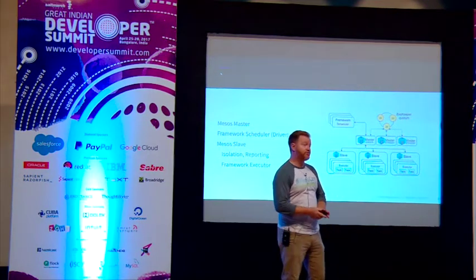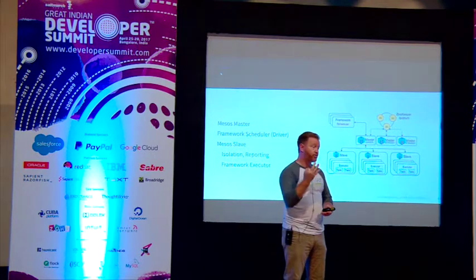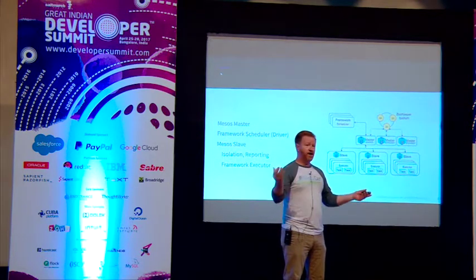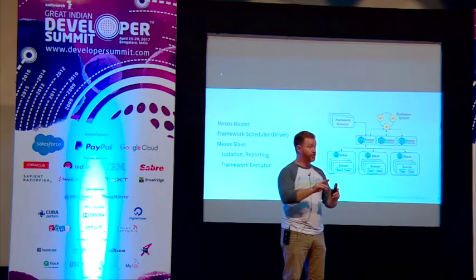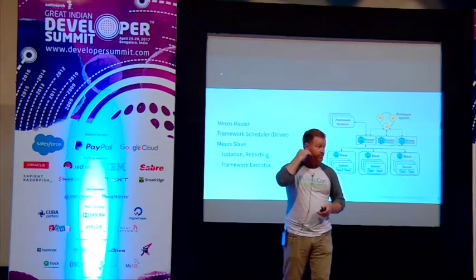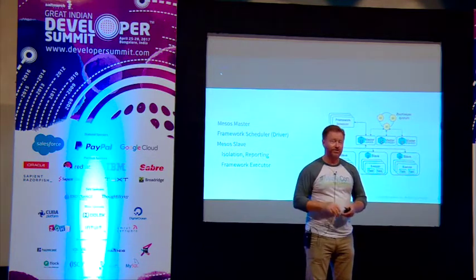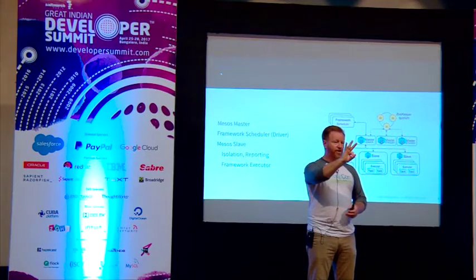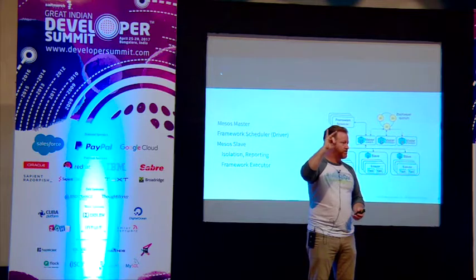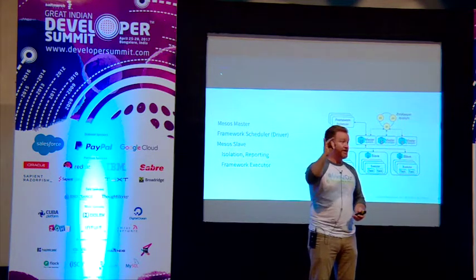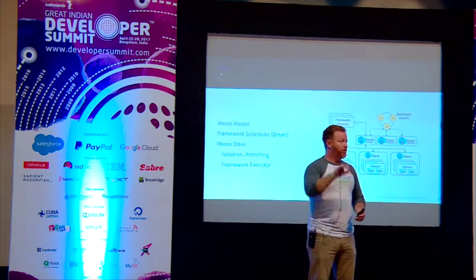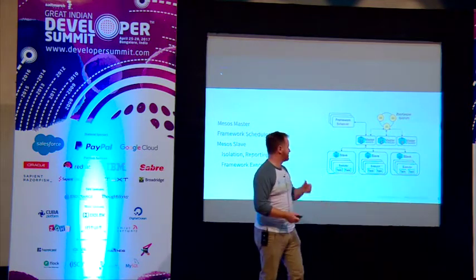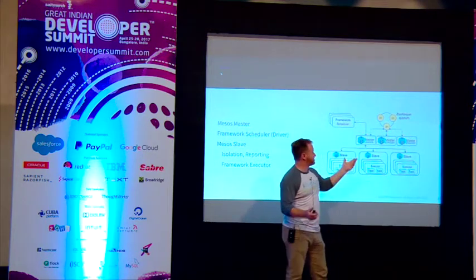In a production environment you're going to have at least three masters; the common infrastructure is either three or five. What we need is a quorum. Three gives you quorum — the ability for two machines to come to an agreement and move forward. Why five? To have the maximum uptime: in a three-node quorum, if you bring one down for maintenance, you have exactly two for quorum, but if something fails you've lost quorum. With five, you can always do a maintenance upgrade and still maintain quorum. Zookeeper manages leader election and service discovery.